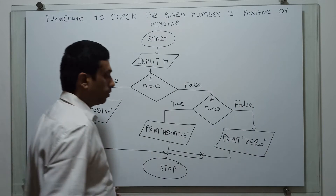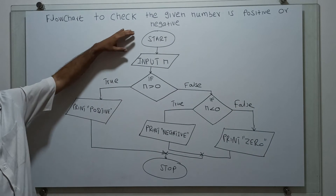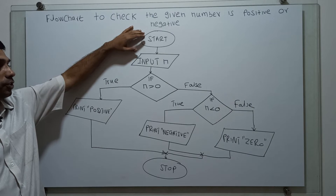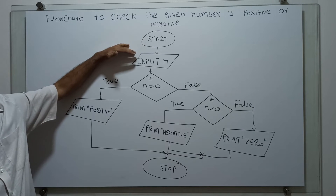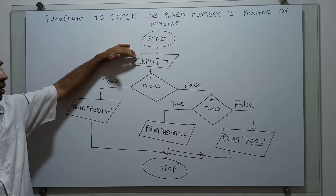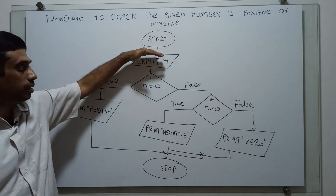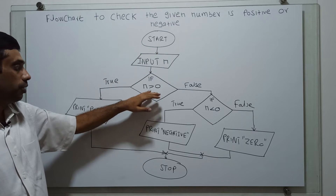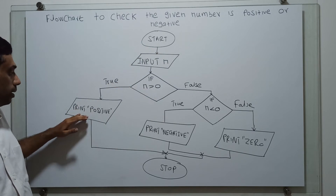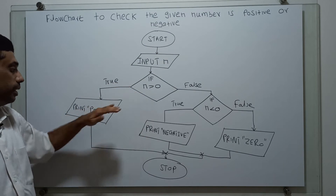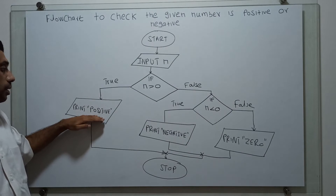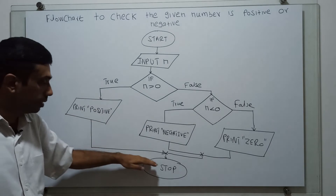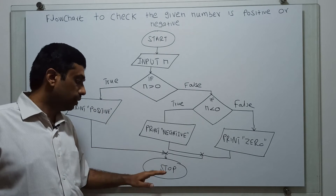So, this is the flowchart. Now I will explain how it works. Logical start of the flowchart — I am obtaining input from the user in the variable n. If n is greater than 0, I am printing positive, meaning n is positive. Then it reaches the end of the flowchart.